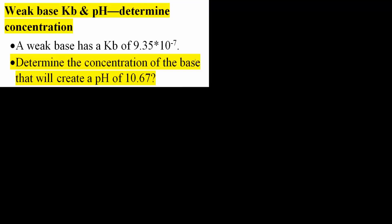In order to find the concentration of OH minus, there's a few steps that we need to do. We need to know that pOH is equal to 14 minus pH since we're dealing with bases. So pOH would equal 14 minus 10.67. This would give us 3.33.